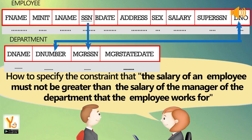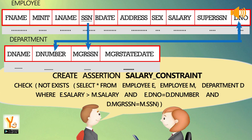How to specify the constraint that the salary of an employee must not be greater than the salary of the manager of the department that the employee works for? CREATE ASSERTION salary_constraint CHECK (NOT EXISTS (SELECT * FROM employee E, employee M, department D WHERE E.salary > M.salary AND E.Dno = D.Dnumber AND D.MGRSSN = M.SSN)).